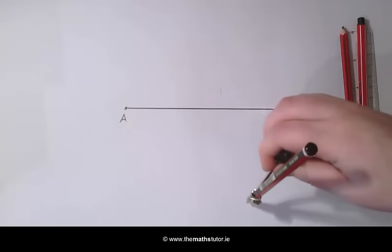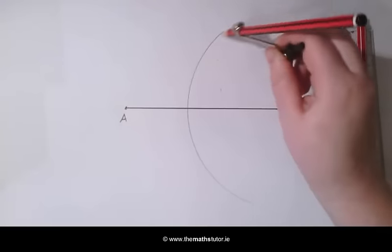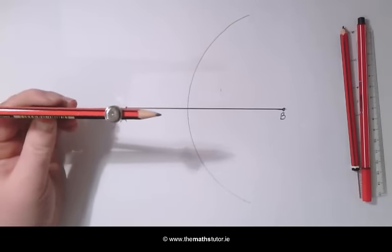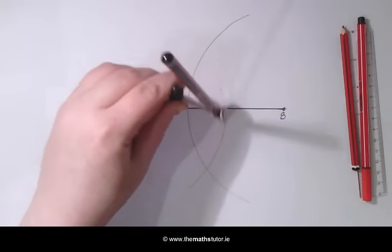We are then going to draw an arc through this line. Without changing the width, we place our compass on A and draw another arc.